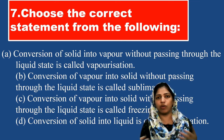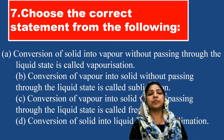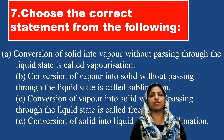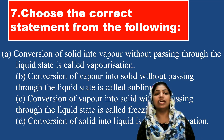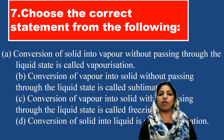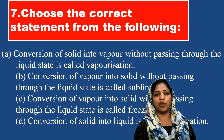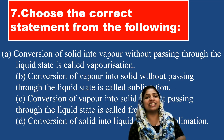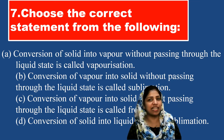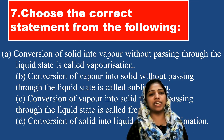Option C states conversion of vapor into solid without passing through the liquid state is called freezing — no, it is called sublimation only. Option D states conversion of solid into liquid is called sublimation — that is also wrong. Option D is wrong.